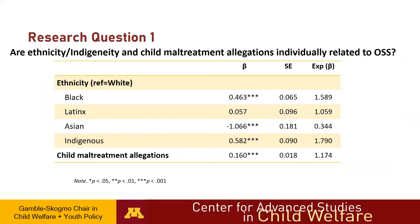This table shows the analysis results regarding research question one: are ethnicity and indigeneity and child maltreatment allegations individually related to OSS? Black students experienced OSS 58.9% more frequently. Indigenous students experienced OSS 79% more frequently compared to white students, whereas Asian students were less likely to experience OSS than white students. For each additional child maltreatment report, a child experienced a 17.4% increase in OSS.